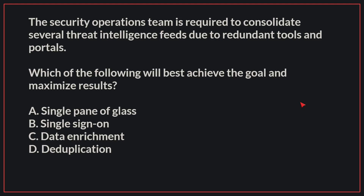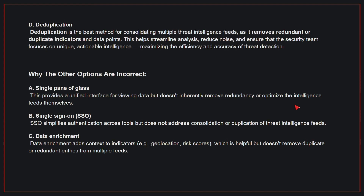The security operations team is required to consolidate several threat intelligence feeds due to redundant tools and portals. Which of the following will best achieve the goal and maximize results? The correct answer is D. Deduplication. Deduplication is the best method for consolidating multiple threat intelligence feeds, as it removes redundant or duplicate indicators and data points. This helps streamline analysis, reduce noise, and ensure that the security team focuses on unique, actionable intelligence, maximizing the efficiency and accuracy of threat detection.